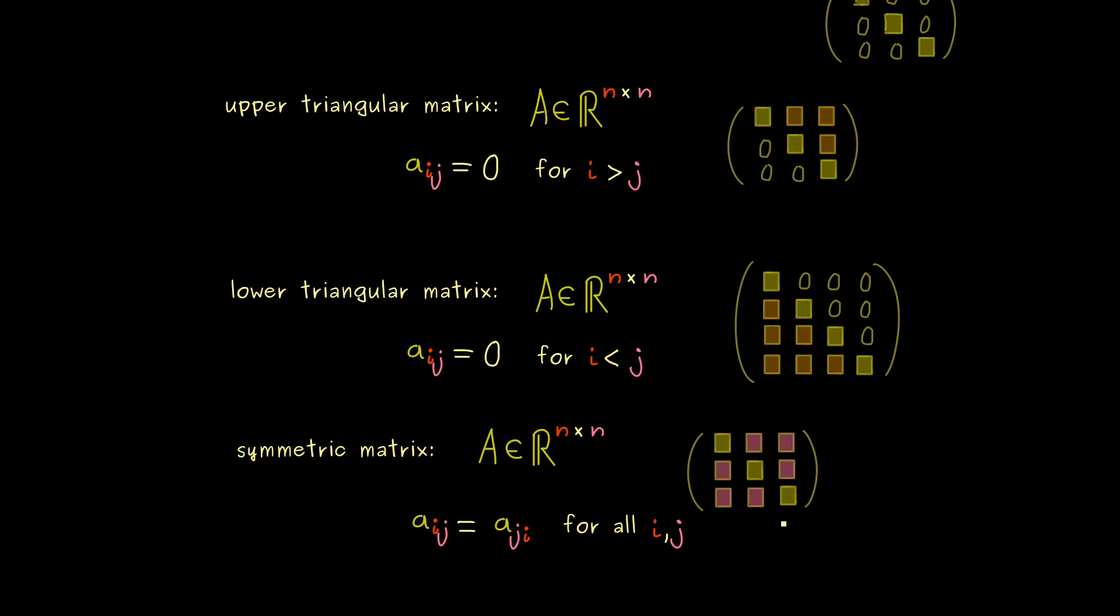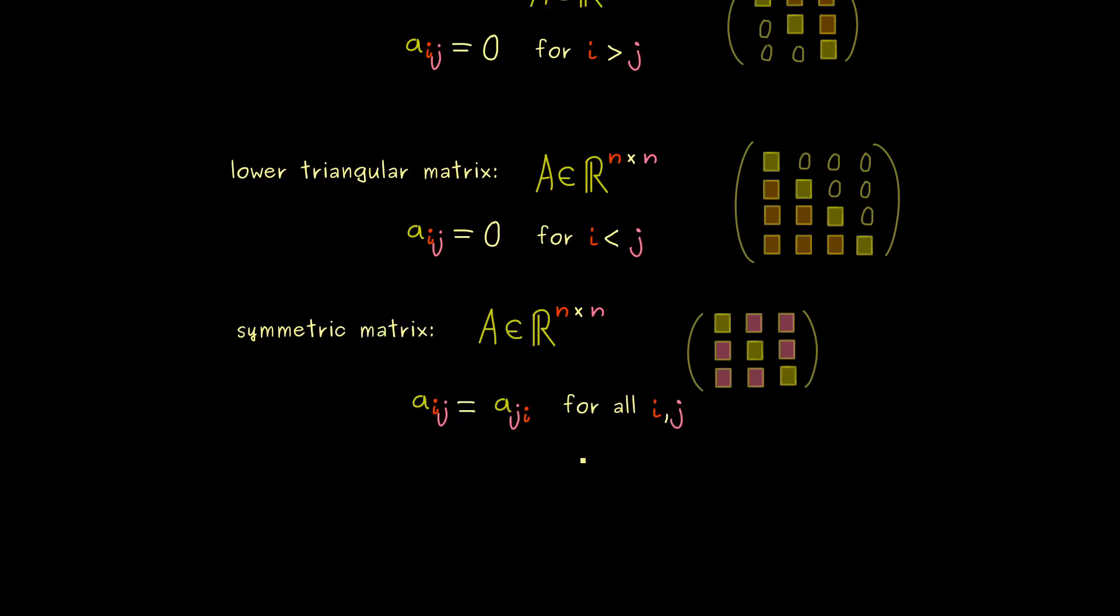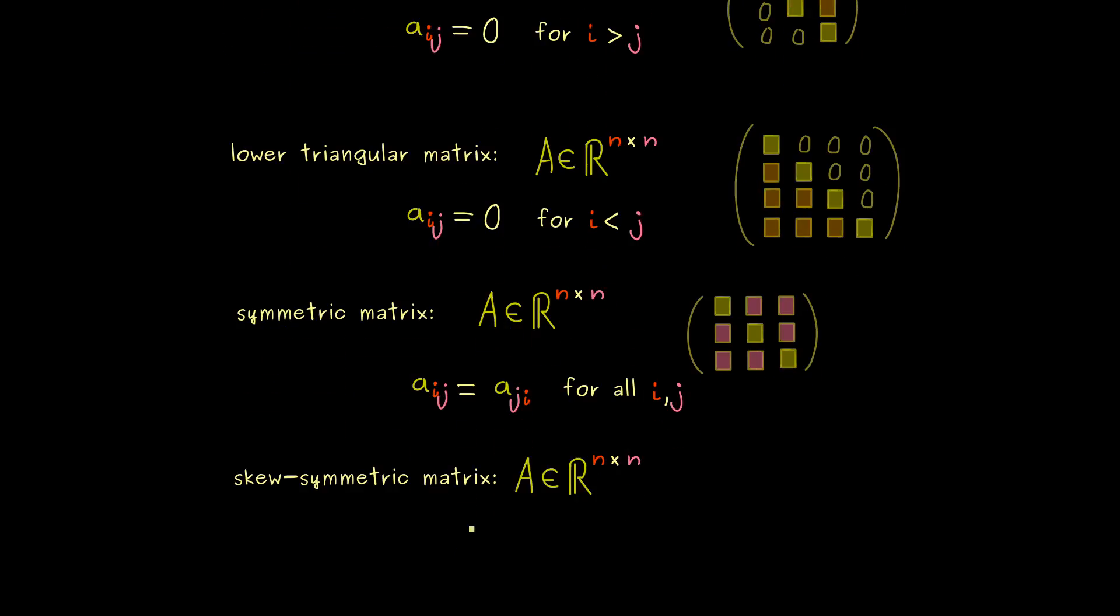Now this nice reflection property here we can also extend to a sign change and then what we get is a so called skew symmetric matrix. It means when we reflect the matrix on the main diagonal we also add a minus sign. So for example a skew symmetric matrix could look like this.